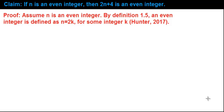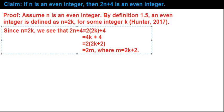So let's revise the proof. To begin, we will start with our assumptions. Assume that n is an even integer. By definition 1.5, an even integer is defined as n equals 2k for some integer k. Once we have our definition of an even integer, n equals 2k, let's use that.